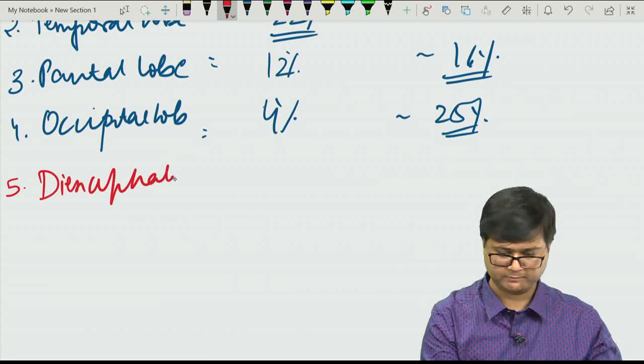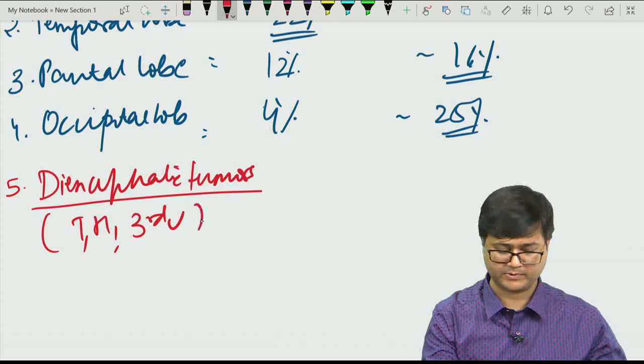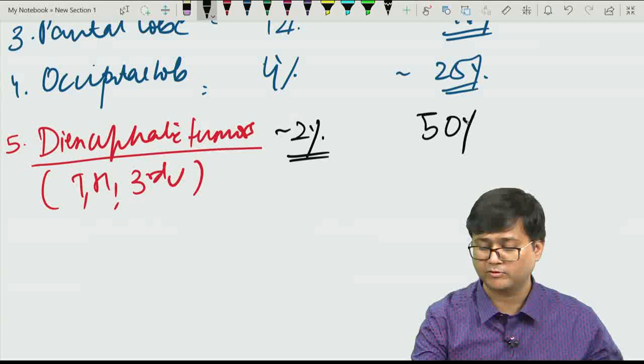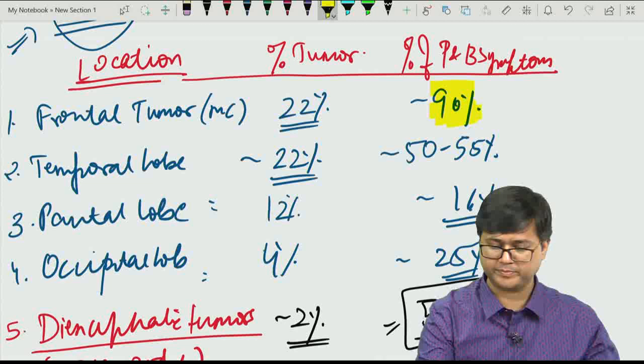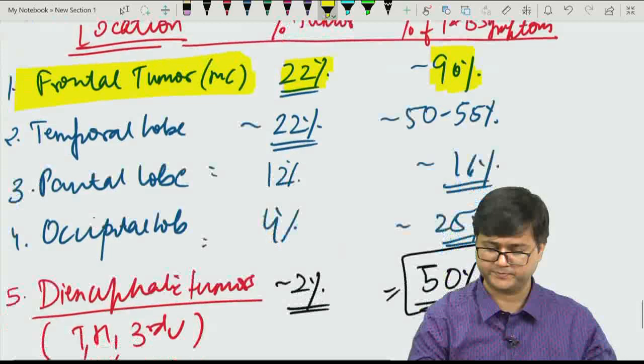Diencephalic tumours — involving the thalamus, hypothalamus, and region around the third ventricle — have a relatively low percentage of overall tumours but psychiatric and behavioural symptoms can be as high as 50%. Frontal lobe tumours are generally considered the most common, though temporal lobe tumours have a similar overall percentage.